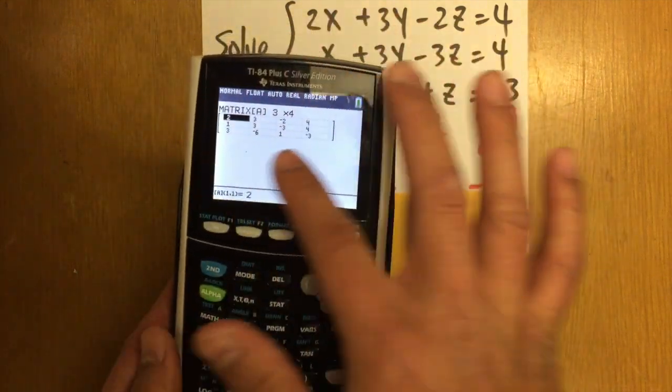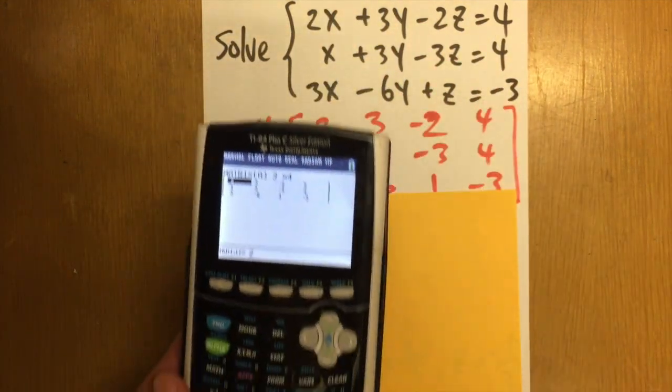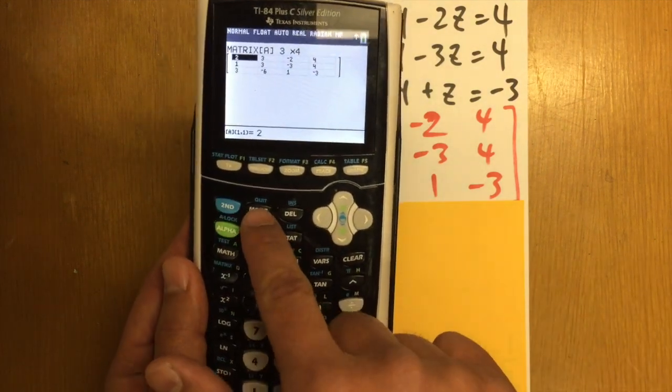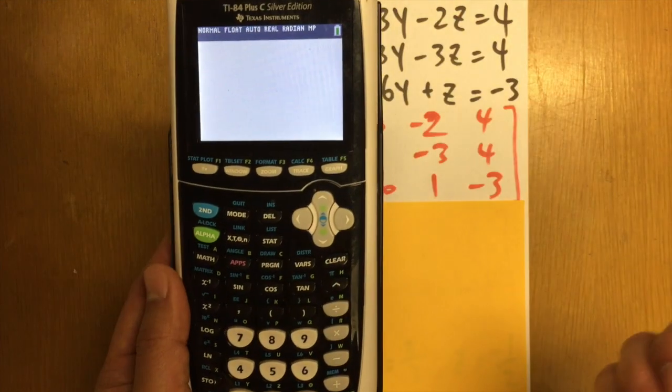So after we fill in the matrix A to be this, this is what we have to do. We have to go back home first. Second, quit. We have to go back to the home page.